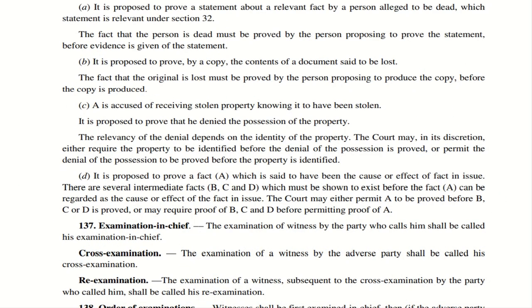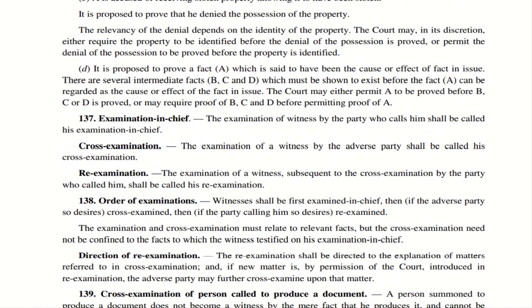Illustration D: There is Fact A which someone is trying to prove as the cause or effect of the fact in issue. There are various intermediate facts B, C, and D which must be shown to exist before Fact A. The court may either permit A to be proved before B, C, or D, or may require B, C, D to be proved first. This again demonstrates that the court has absolute discretion to decide the order in which things are to be proved.